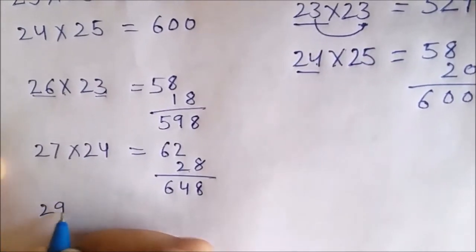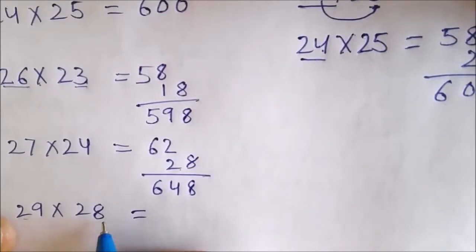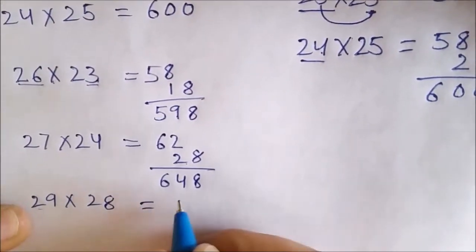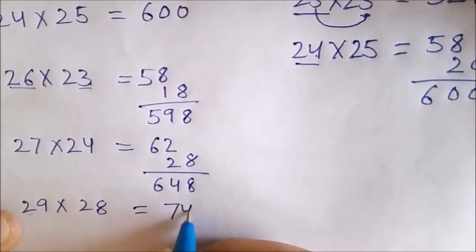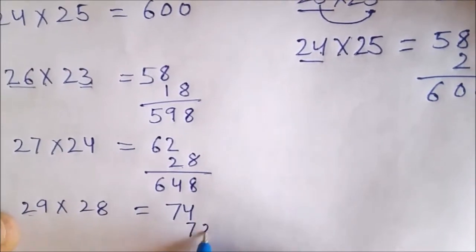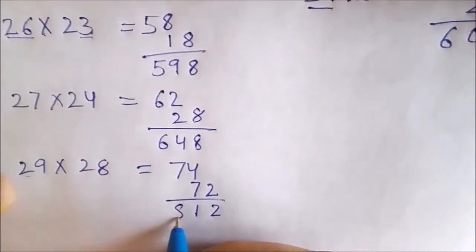What if 29 is to be multiplied by 28? 29 plus 8 is 37. Double of 37 is 74. 9 eights are 72. So, answer to this question is 812.